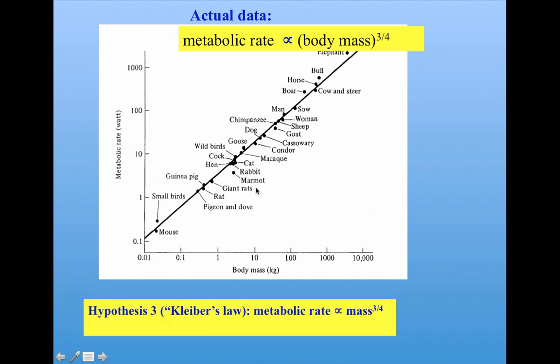This is called Kleiber's law, after the person who discovered it, and for 60 years, nobody really understood why metabolic rate would scale with body mass to the three fourths. At this point, let's stop and have a brief quiz to make sure you understand what we've done so far.